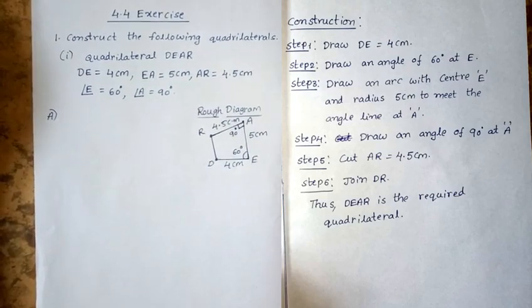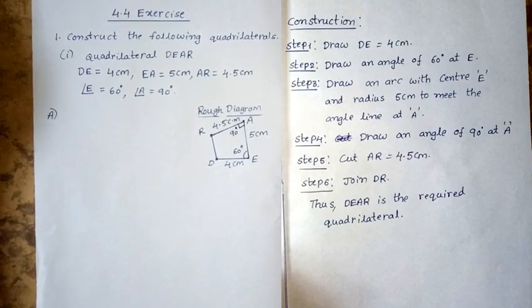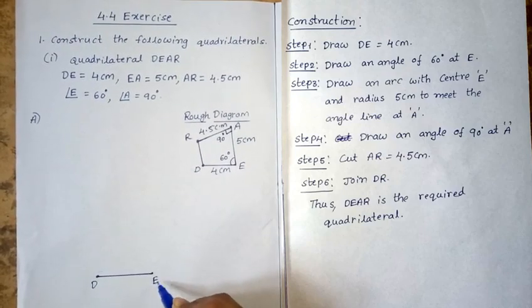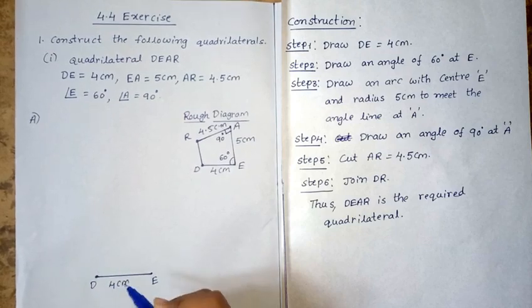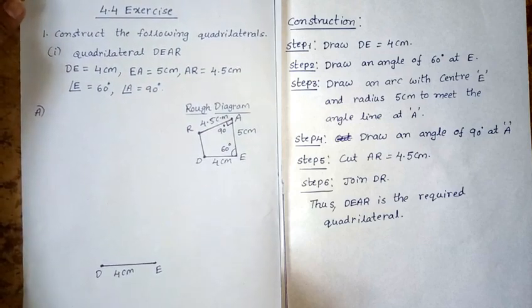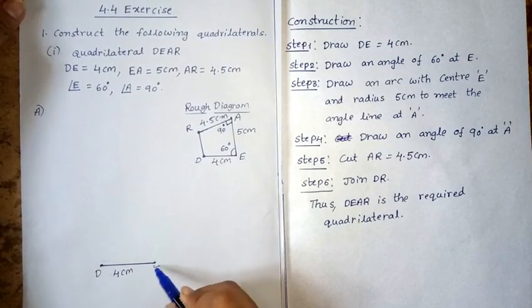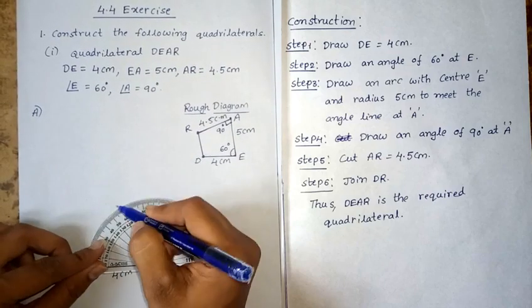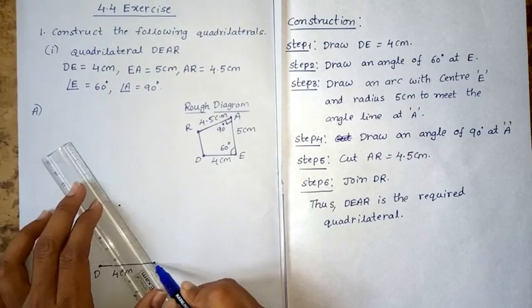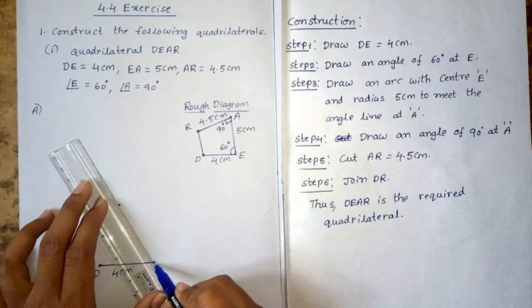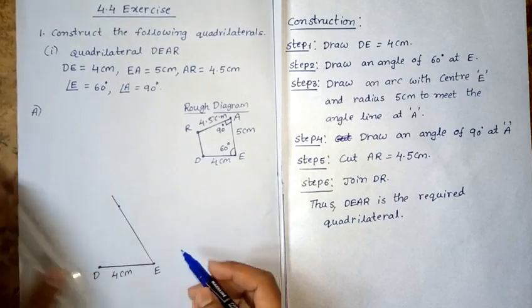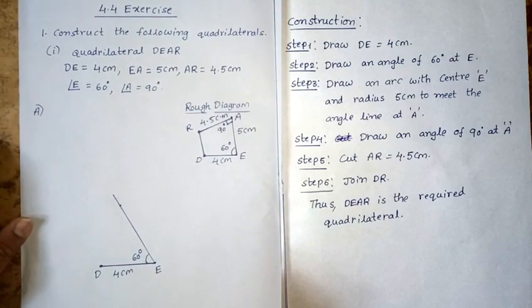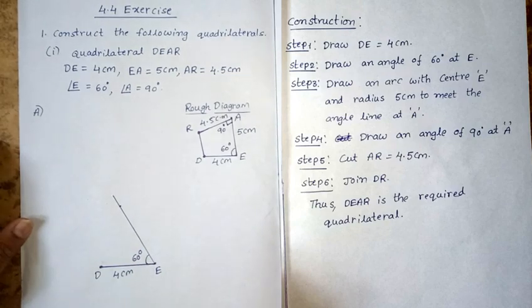Construction. 1st step: draw DE equal to 4cm. This is a line segment of 4cm length. Next, this is angle E equal to 60 degrees. Draw an arc with center E and radius 5cm to meet the angle line at A.